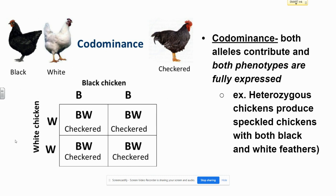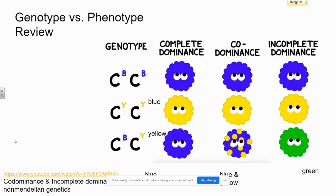Both alleles have been fully expressed. Watch this really excellent review on YouTube called Co-Dominance and Incomplete Dominance Non-Mendelian Genetics. You will see this same diagram. Come back, and then we'll practice.